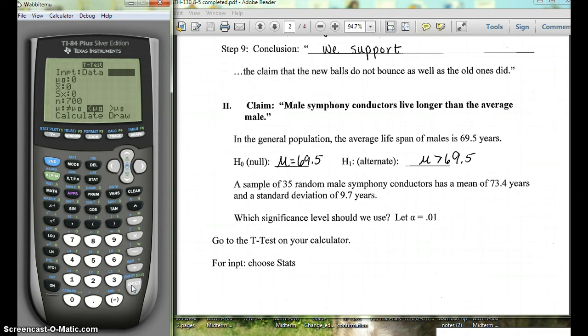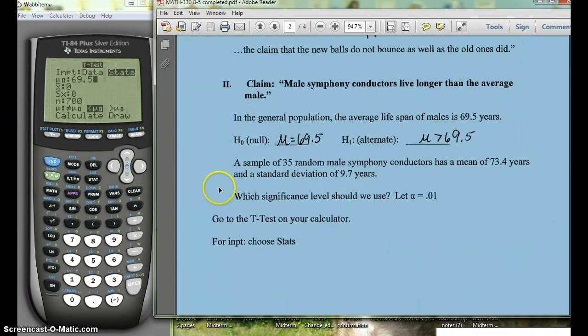Now you can either put in the data if you aren't given the averages, you're just given data, or you can put in the stats. So we're going to put in stats. The mu zero, that's what is given here in your claim, so 69.5. And remember that this is a greater than claim, so at the bottom we're going to use greater than.